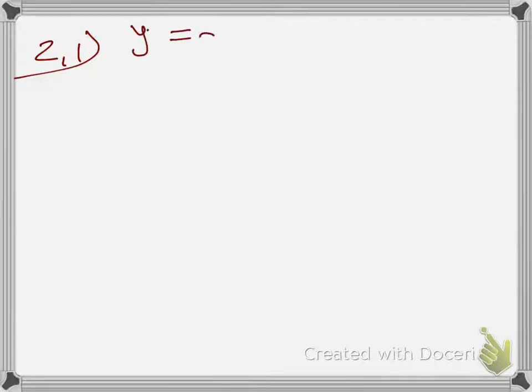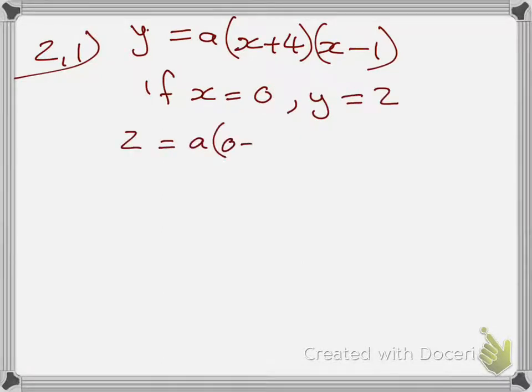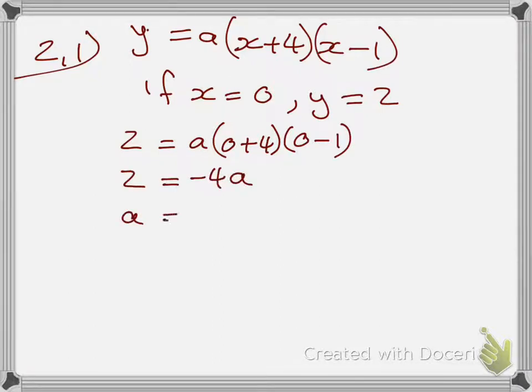For 2.1, first you look at the roots. Since you don't know the value of a, you take the roots and write your equation as y equals a times open bracket x plus 4, multiplied by x minus 1, close bracket. Then you say if x equals 0, y will be equals to 2. Substitute — where there's y put 2, where there's x put 0 — and simplify. You'll see that 2 equals negative 4a.